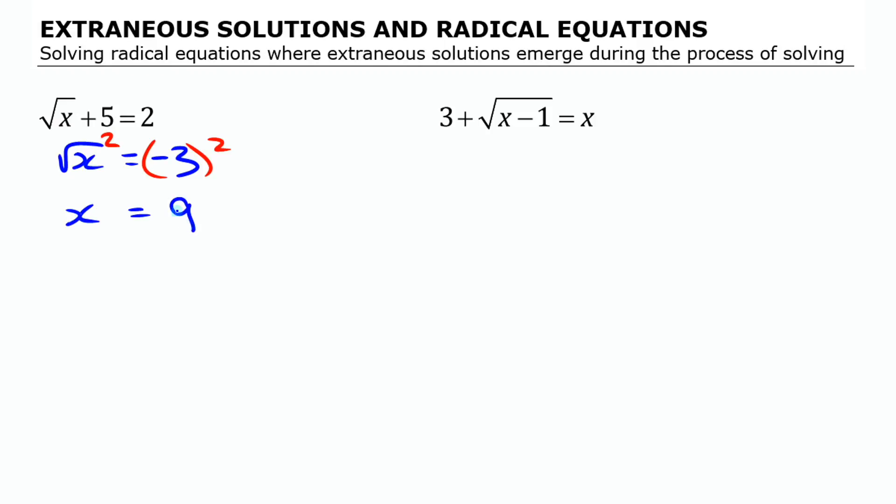That is the solution to my equation that I have got through this process. But here is the first place where it is going to be really important to check your solution. First of all, let's check that I did everything right here. When I moved the 5 over, I made it negative 5 on the other side. 2 minus 5 is negative 3. So that is the right value over there. I squared both sides. I squared this side, it gives me x. I squared this side, it gives me positive 9.